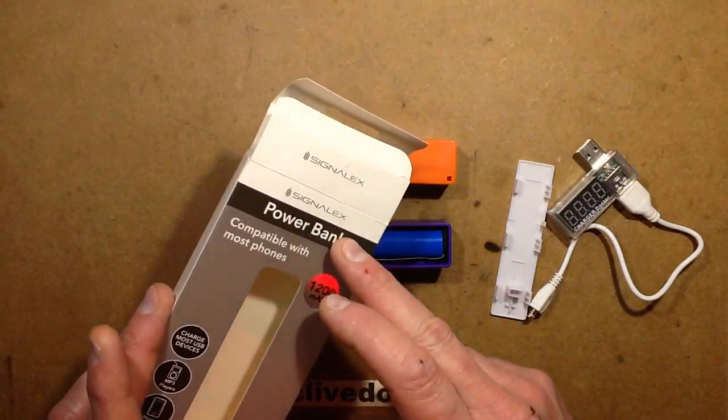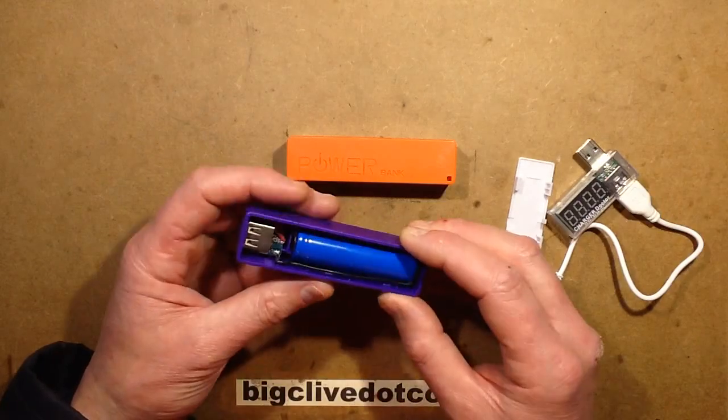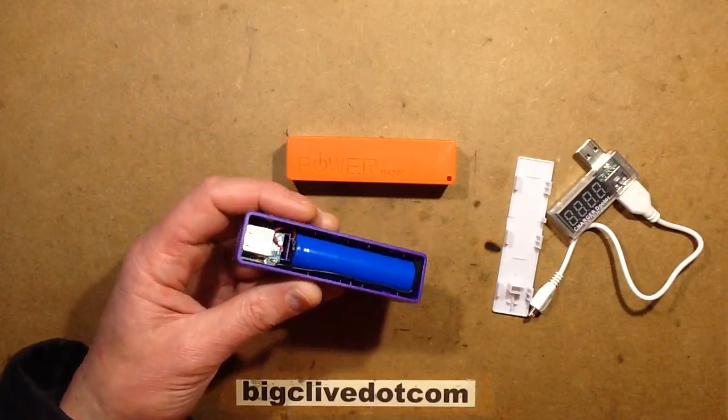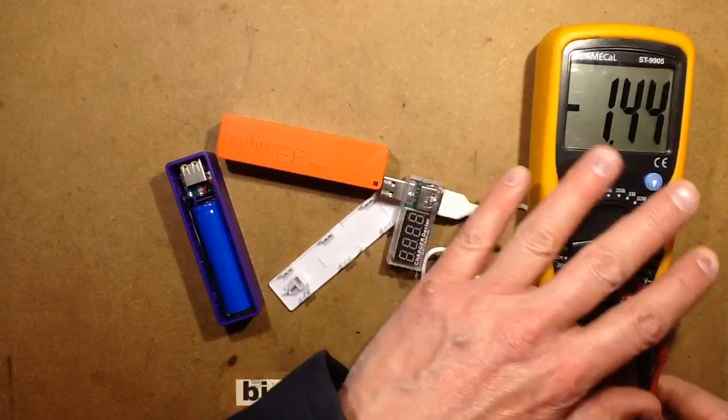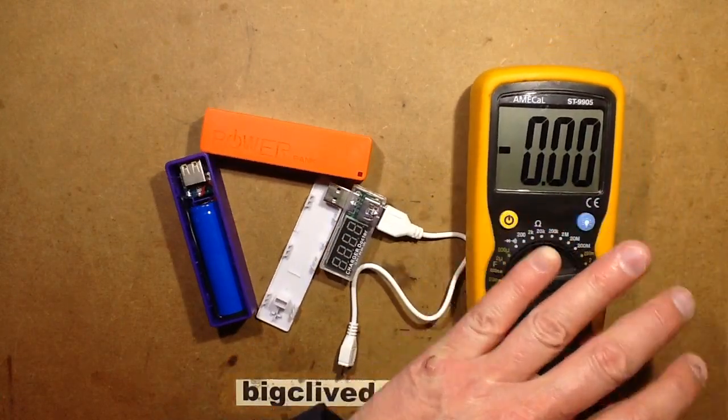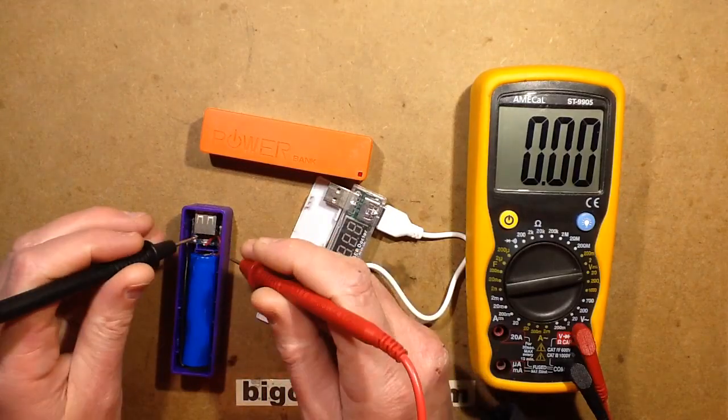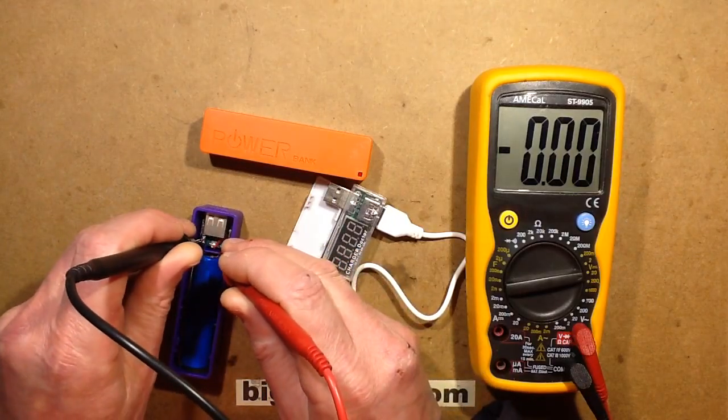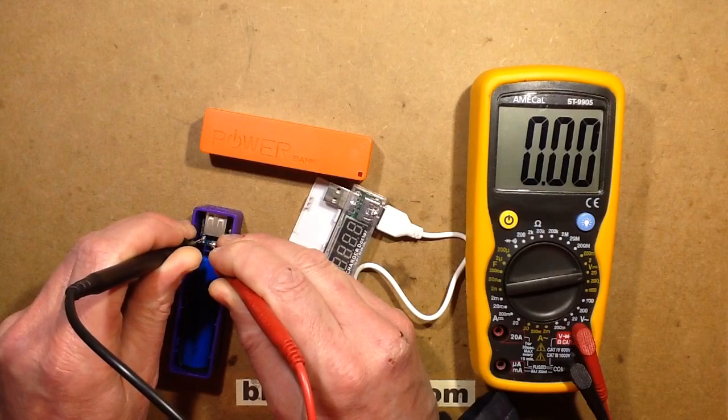They're under the Signal X brand and the first one I got was this purple one and it was dead on arrival. Let me get the meter here. So let's power the meter up, bring it into shot and measure the voltage across this cell. On to negative and on to positive, and I'm getting zero, zilch, nothing at all.